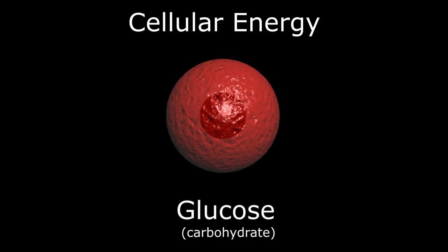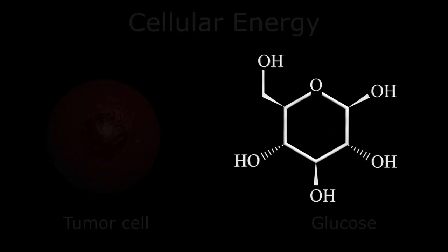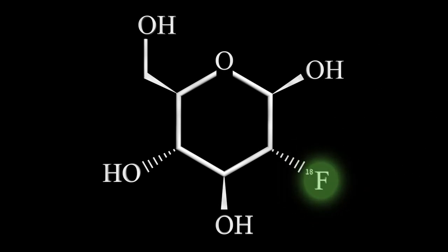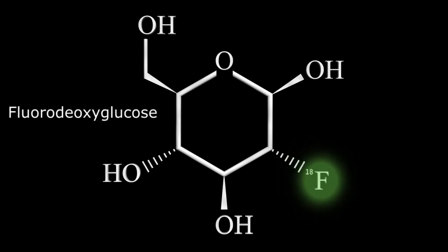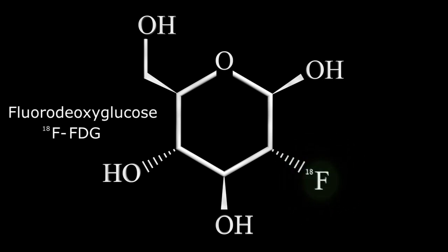The preferred energy source for tumors is glucose, the basic carbohydrate consisting of a hexagonal carbon-oxygen backbone with five hydroxyl side chains. If we substitute one of the hydroxyl side chains with a radioactive fluorine atom called F-18, we produce fluorodeoxyglucose, also known as FDG, or more appropriately, 18-fluorine FDG. The molecule still functions like glucose in the body and is therefore known as a glucose analog.